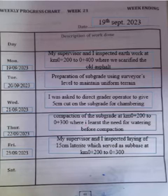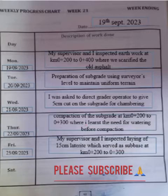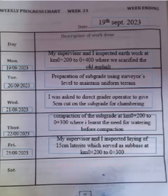The second activity was the preparation of the subgrade using a surveyor's level to maintain uniform terrain. These are the actual processes you follow in reporting your logbook to attract the attention of your lecturers, so that at the end you'll be sure of your A. It also says I was asked to direct the grader operator to give a 5cm cut on the subgrade for cambering.